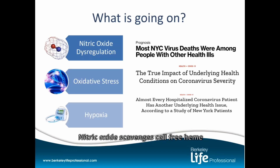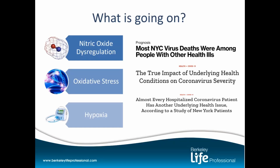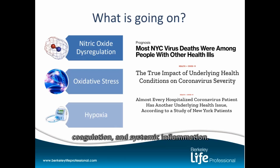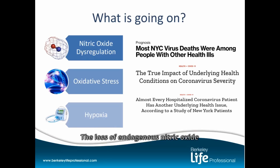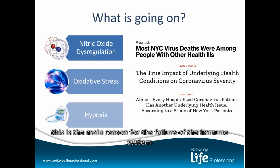Nitric oxide scavenges cell-free heme, but this makes nitric oxide un-bioavailable. The loss of nitric oxide leads to hypertension, coagulation, and systemic inflammation. 90% of patients with pneumonia have increased coagulation due to nitric oxide depletion. The loss of endogenous nitric oxide also decreases our ability to suppress viral replication — this is the main reason for the failure of the immune system.